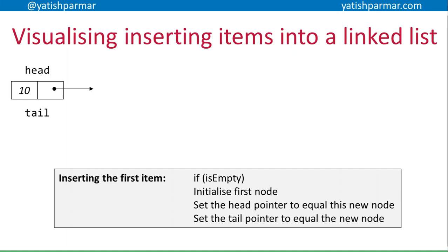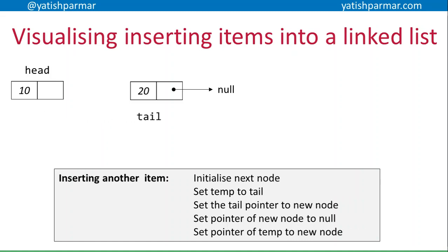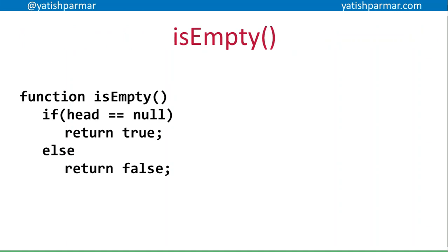I've got a head pointer and a tail pointer associated with my actual list, so I know where the list starts and ends. Each node itself has a pointer that points to the next node in the list. Now if I want to insert another item, I initialize the next node, then set a temp variable to the tail. I then set the tail pointer to the new node — so my tail pointer is now on the new node, and the pointer of the new node is null, meaning it's the last node. I then set the pointer of temp to the new node, which shifts the pointer from the old tail to the new node.